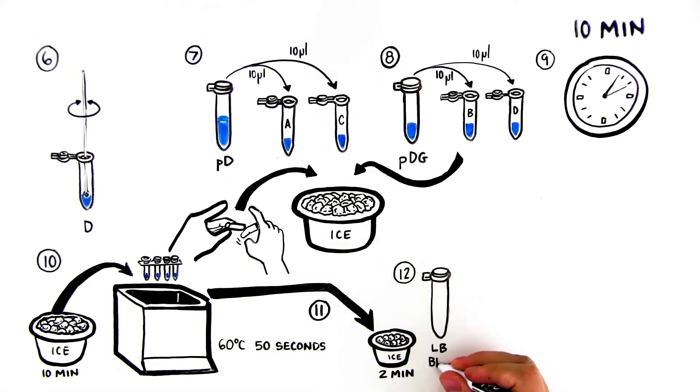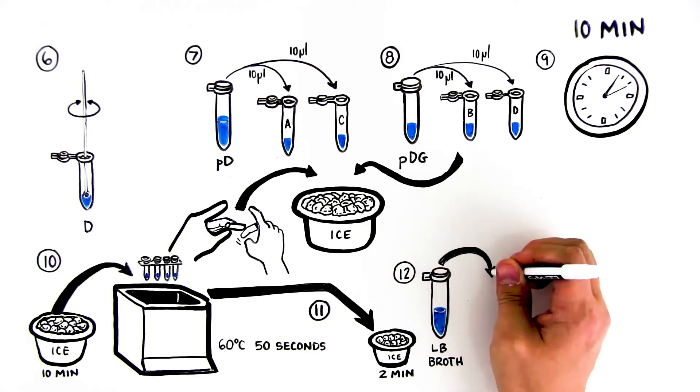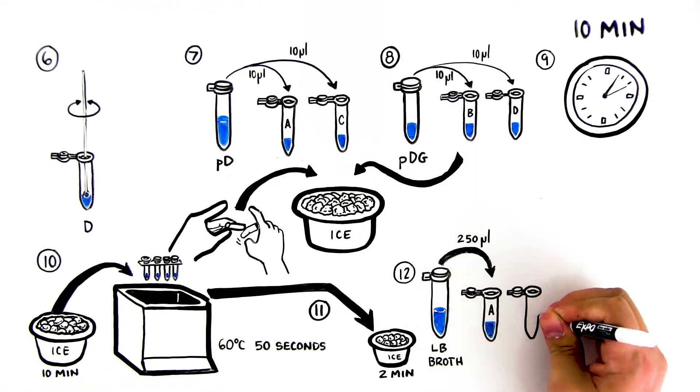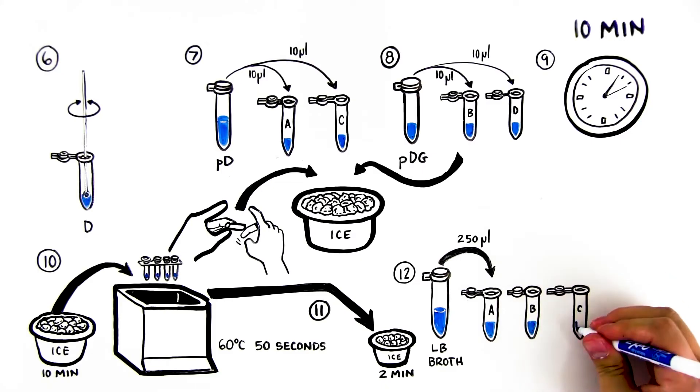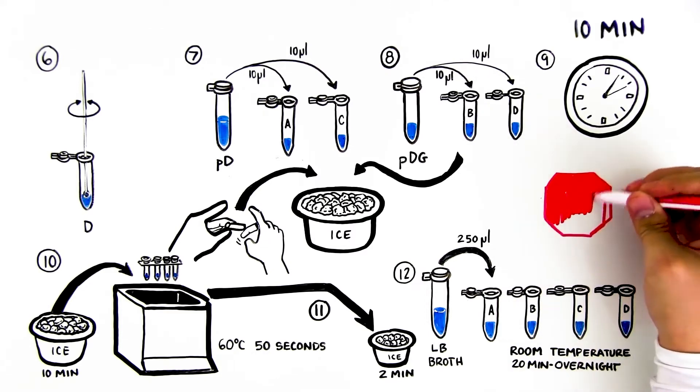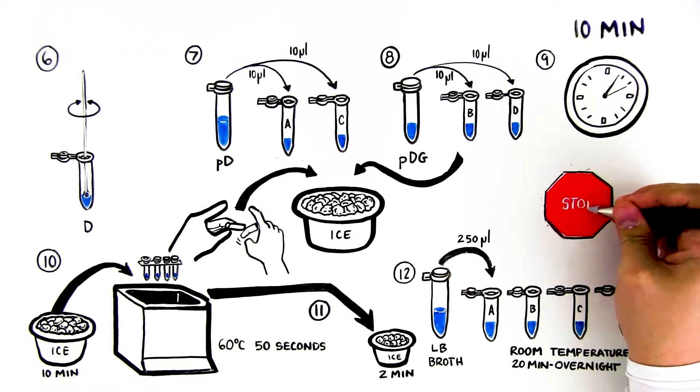Step 12: Using a new pipette tip, add 250 microliters of LB nutrient broth to each tube. Close each tube and gently flick three times to mix. Leave at room temperature for 20 minutes to overnight. Ask your instructor whether to proceed now or tomorrow.